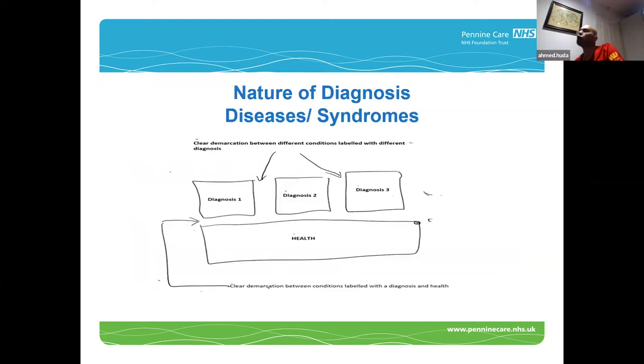One issue about diagnosis is validity. Some people, when they say validity, mean utility. Others mean something that exists independent of our mind. Some suggest it's about zones of rarity between different conditions. So validity means different things — it doesn't mean something is simply true or false in this context. It means a variety of things.